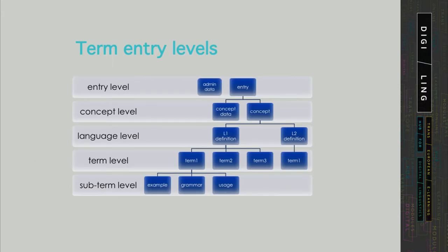We already introduced the basic structure of a term entry in Unit 2, but now we are ready to organize it into logical levels which contain the relevant data fields. Starting from the top, we have the entry level, which will typically contain some administrative data about this entry, such as the entry number. Then we have the concept level, which contains some concept data and the concept itself.